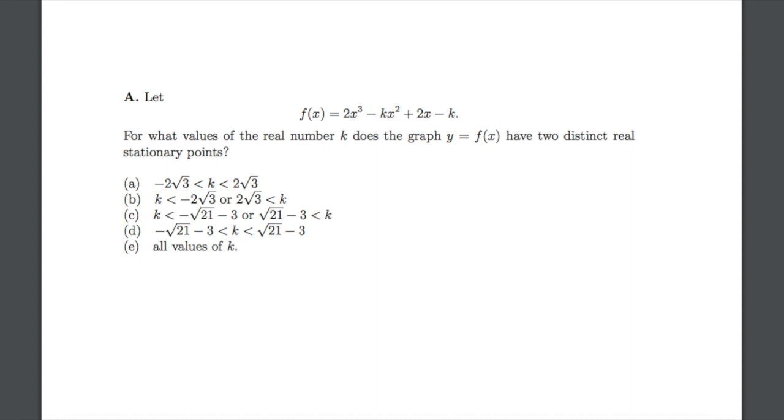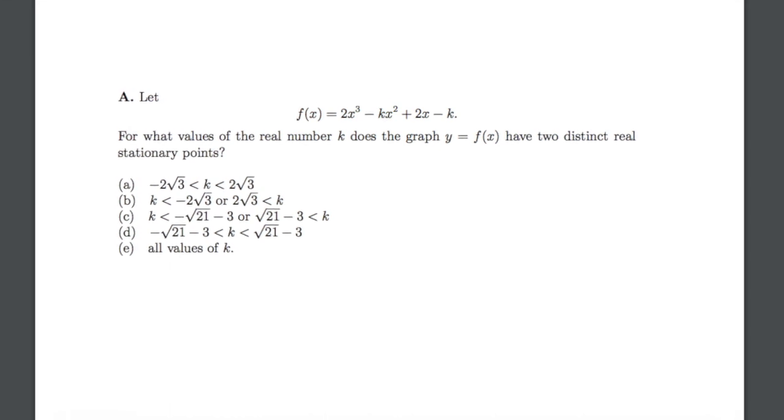Okay, that's enough talking, let's get into the maths. So let's have a look at question 1a. We are given the polynomial f(x) = 2x³ - kx² + 2x - k, and we are asked for what values of the real number k does the graph y = f(x) have two distinct real stationary points, and we are given our five possible answers.